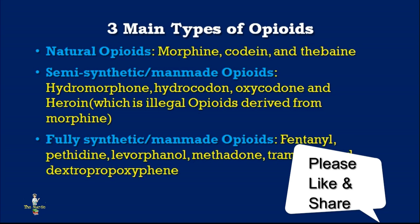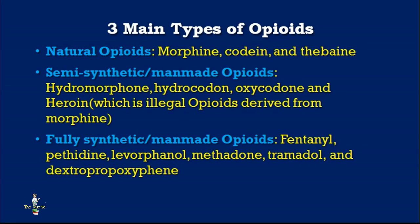Three main types of opioids: first, natural opioids — examples: morphine, codeine, thebaine. Second, semi-synthetic or man-made opioids — examples: hydromorphone, hydrocodone, oxycodone, and heroin. Heroin is an illegal opioid derived from morphine. Third, fully synthetic man-made opioids — fentanyl, pethidine, levorphanol, methadone, tramadol, and dextropropoxyphene.